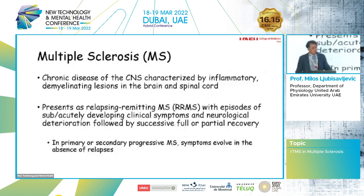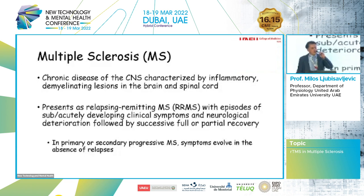To start, just a brief introduction about multiple sclerosis. As you all know, it's a chronic disease of the central nervous system which is characterized by inflammatory, primarily demyelinating lesions of the brain and the spinal cord. Nevertheless, I will try to draw your attention to other hidden aspects of multiple sclerosis — that is the involvement of the brain matter, which is often neglected.